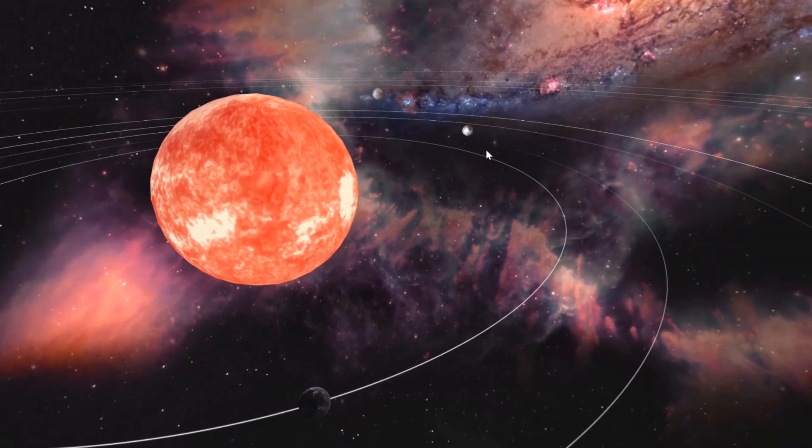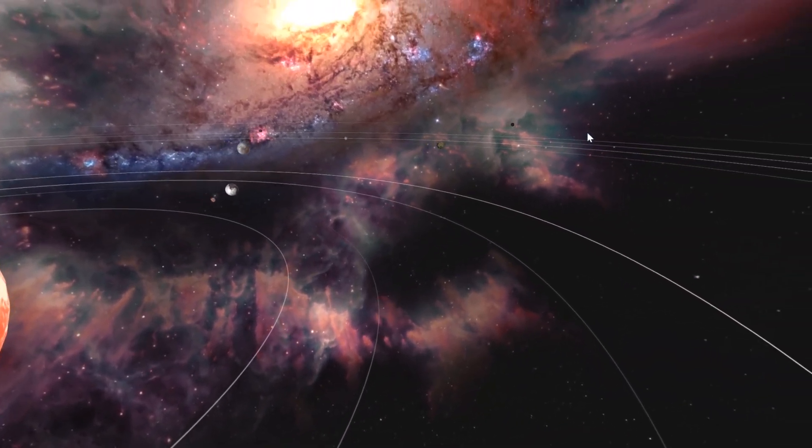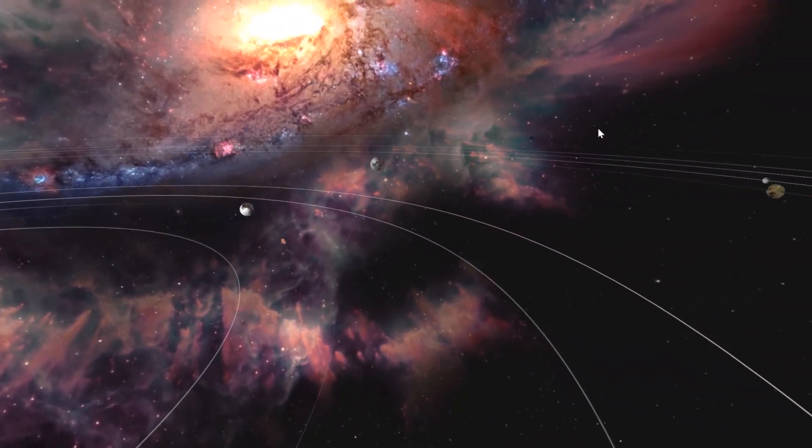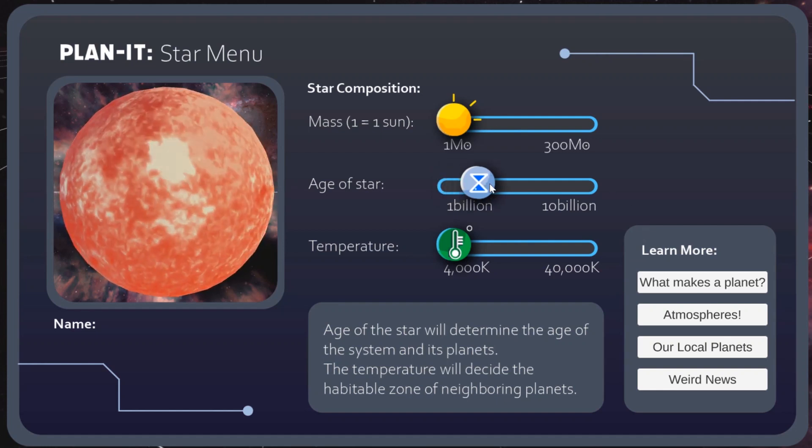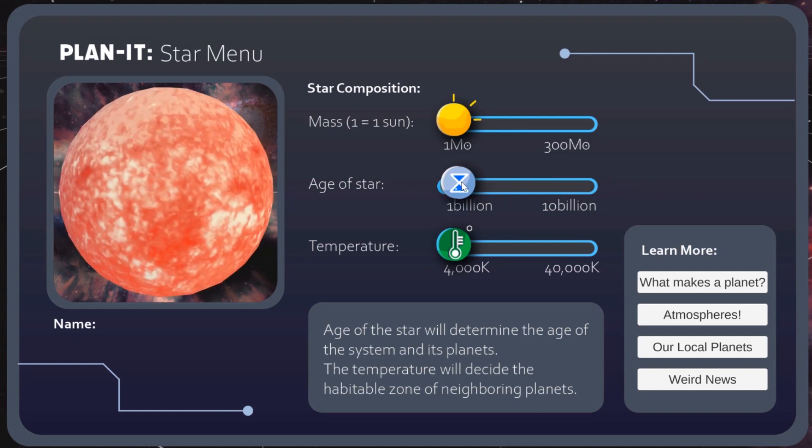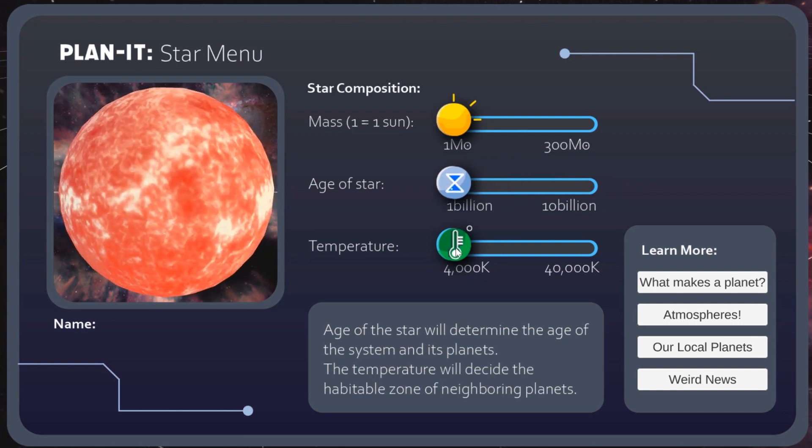You can navigate and inspect stars and planets to learn more about their relationships. A user interface allows you to customize your solar system. You can change your star's age, temperature, and mass.